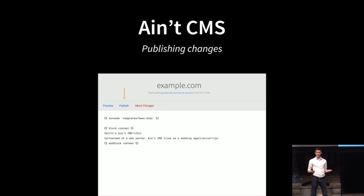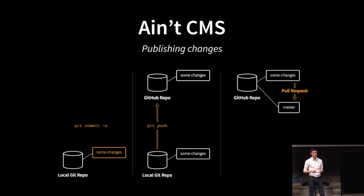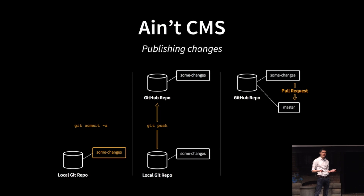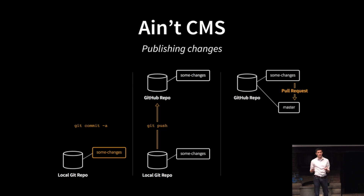After they're happy with their changes, they simply click Publish, which tells Ain't CMS to create a commit, push that commit back to the origin repo, and create a pull request asking to merge those changes into the master branch. This lets developers make sure the changes didn't break anything before merging into the main codebase. Note that this is the exact same review process that developers use with their code — but with Ain't CMS, authors can now participate in this process as well.